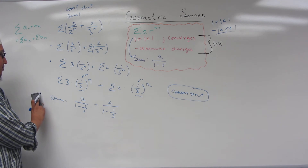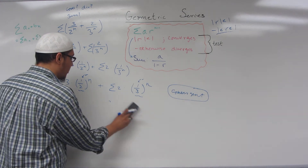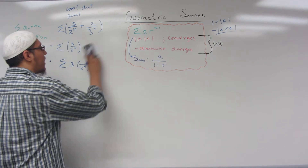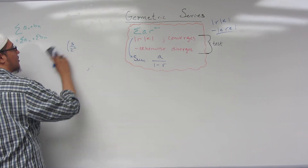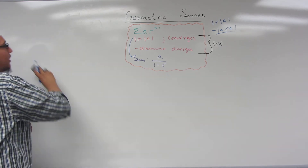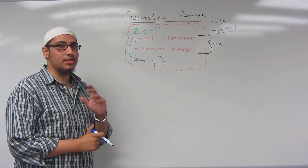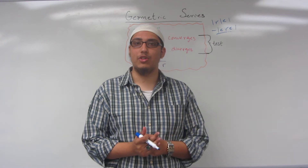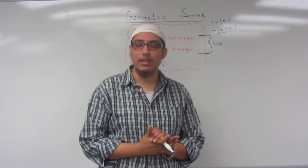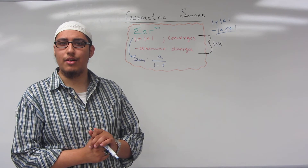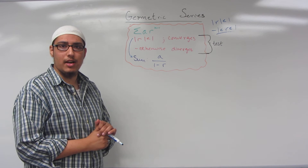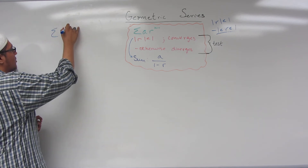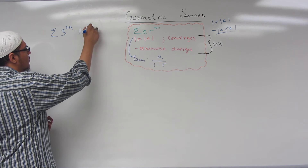Our next example will be a little bit more about rewriting these series. Keep in mind that to do these, your algebra has to be strong. If you're having trouble with algebra skills, let us know and we'll make a video. We have already started an algebra playlist at youtube.com/mathguys. This last example: sigma 3 to the 2n times 15 to the minus n. The question is: is this convergent or divergent?